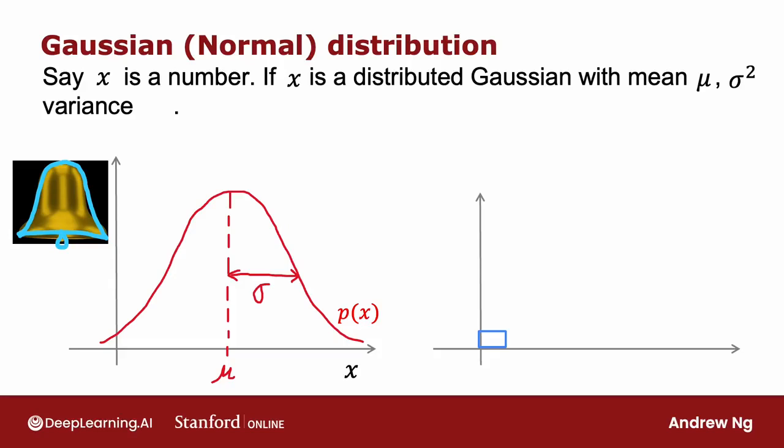Better looking than my hand-drawn one, there's a picture of the Liberty Bell, and indeed the Liberty Bell's shape on top is a vaguely bell-shaped curve. If you're wondering what this p of x really means, here's one way to interpret it. It means that if you were to get a hundred numbers drawn from this probability distribution, and you were to plot a histogram of these hundred numbers, you might get a histogram that looks like this, and so it looks vaguely bell-shaped.